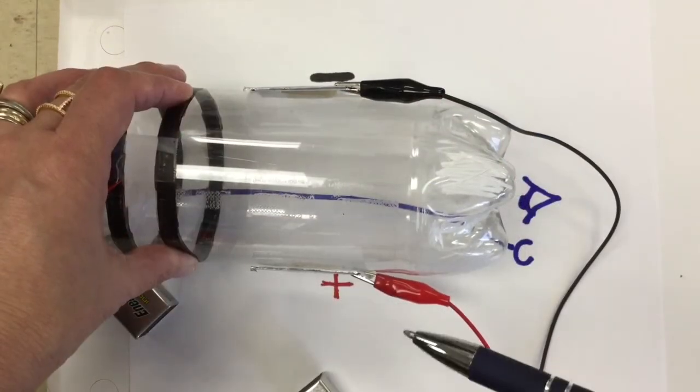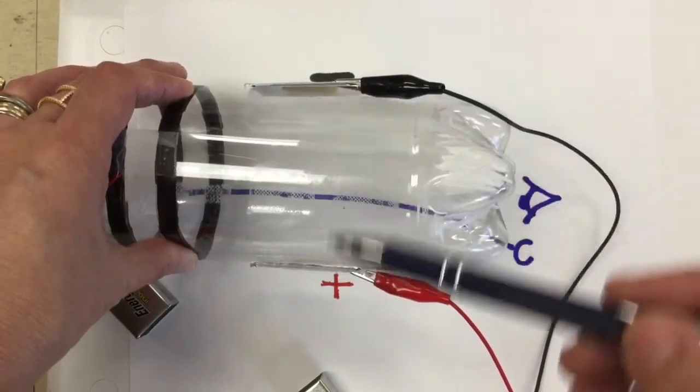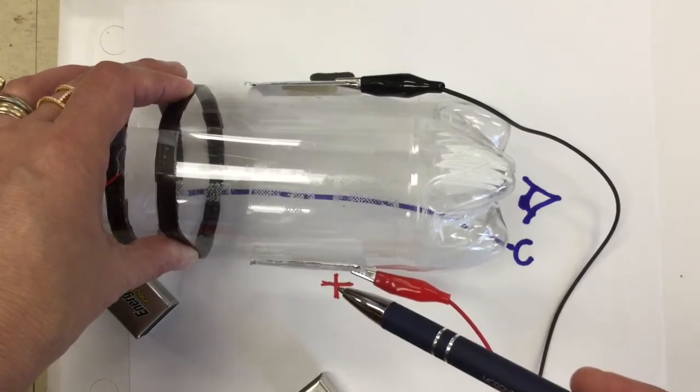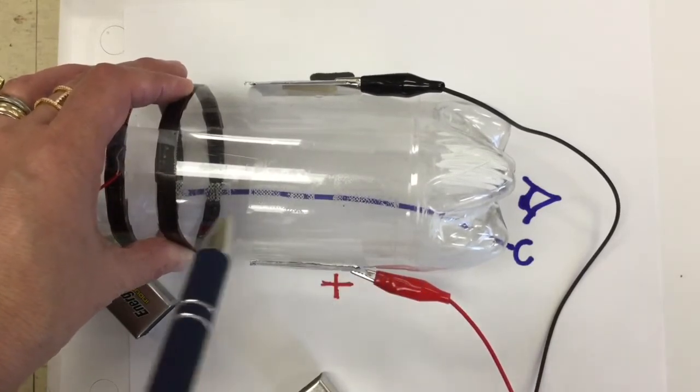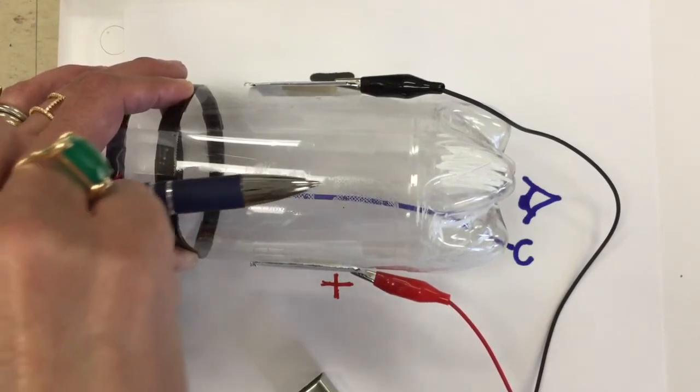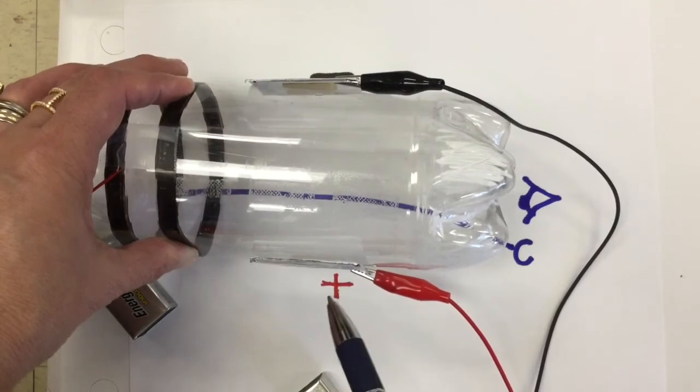When Thomson reversed the polarity of the parallel plates, now the top one is negative and the bottom one is positive. He observed that the beam was deflecting toward the positive side of the battery.